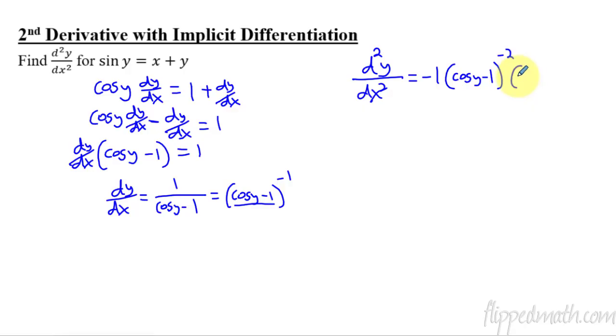So the derivative of that is going to be negative sine y, derivative of negative one is just zero, times the derivative of cosine y. Now you have to do the derivative of y, which is dy dx. Okay, this is where it becomes a little bit more complicated. In fact, let's clean this up just a little bit before we do our next step.